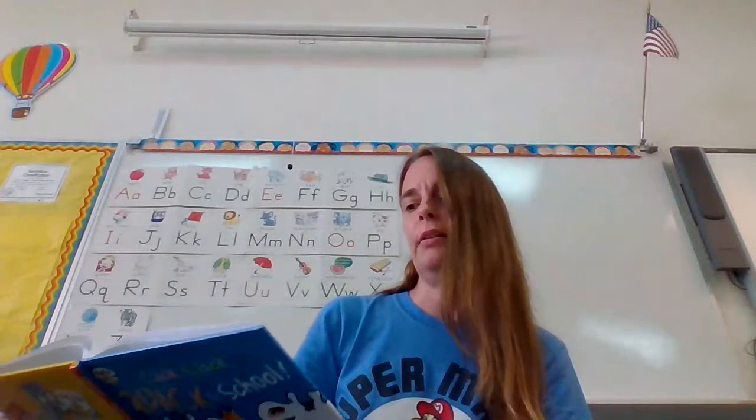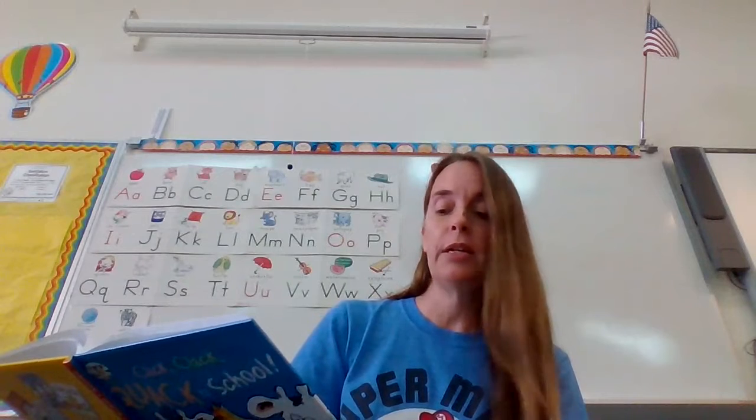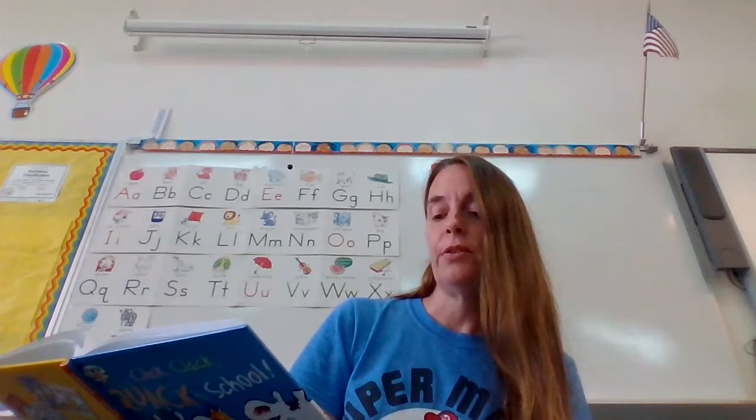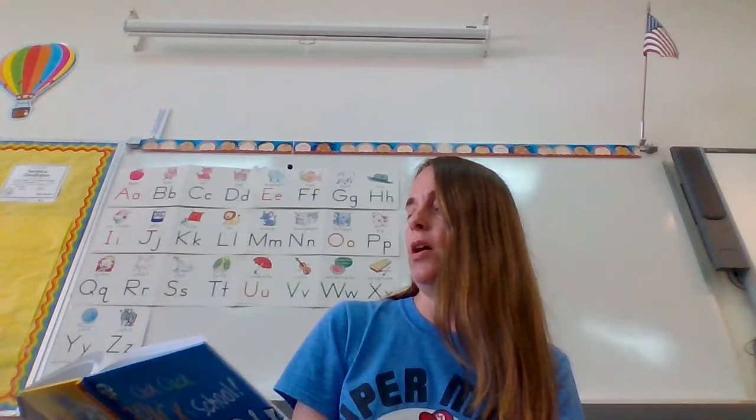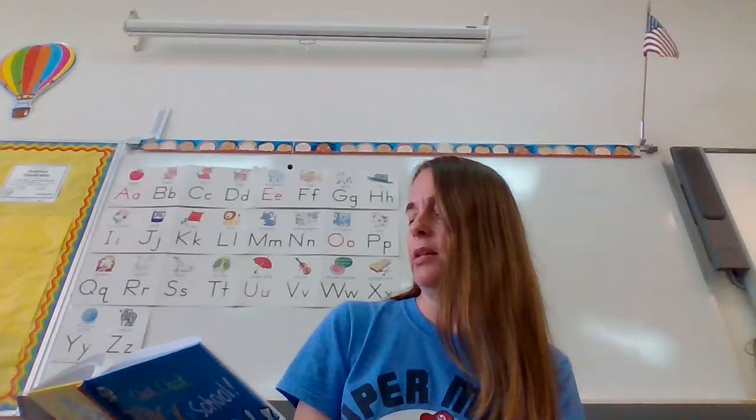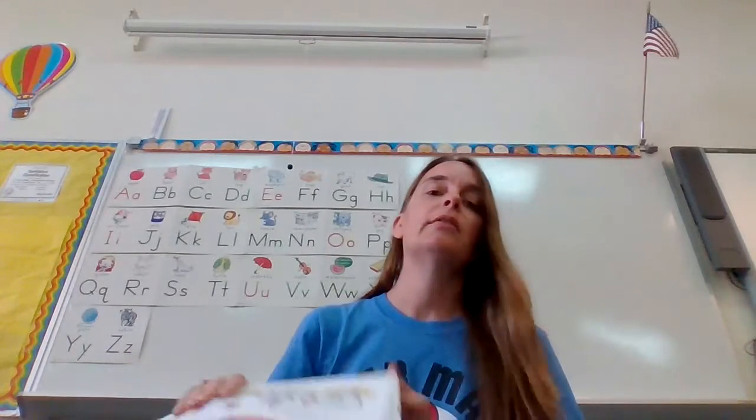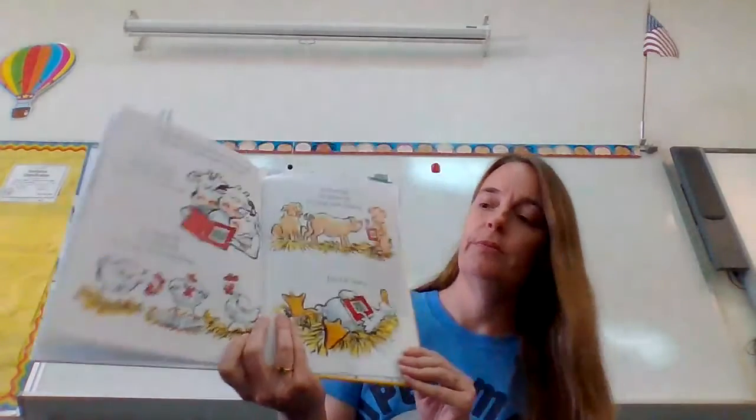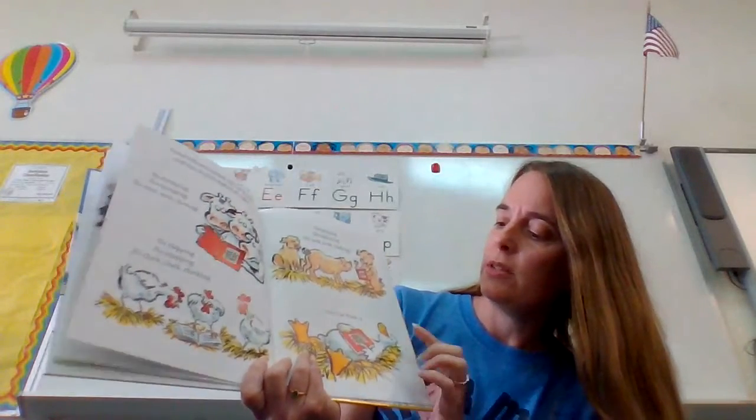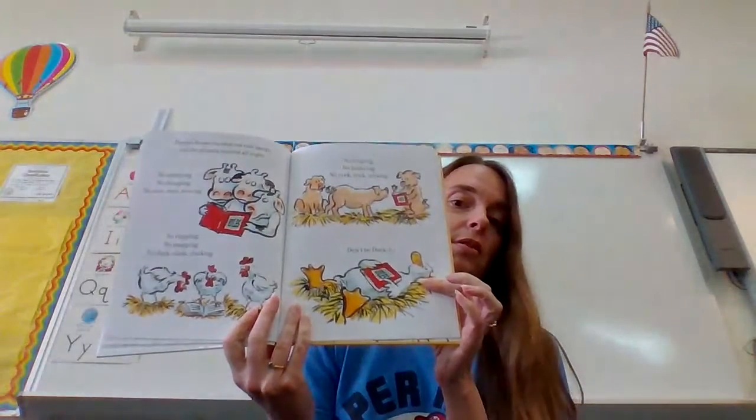Farmer Brown handed out rule books, and the animals studied all night. No stomping, no clomping, no moo, moo, mooing. No clapping, no snapping, no cluck, cluck, clucking. No hooting, no hollering, no oink, oink, oinking. Don't be ducky. Well, all the animals are looking at their books except for Duck. And he just went to sleep.